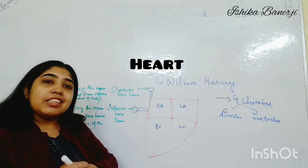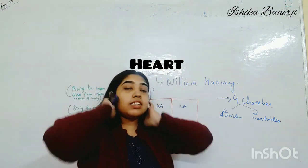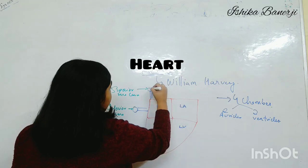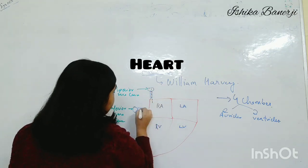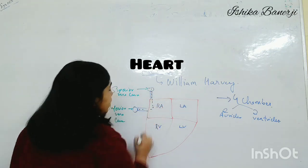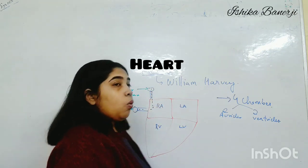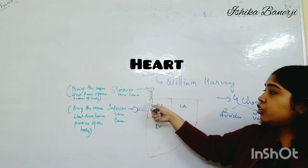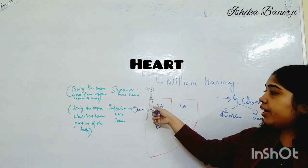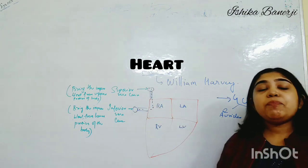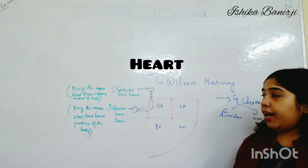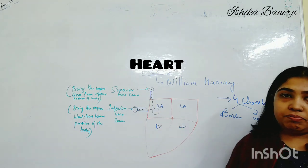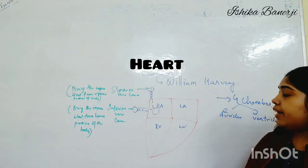So the impure blood is coming in. The question is: who brings the impure blood? The superior vena cava and the inferior vena cava bring the impure blood — and where does it come? It comes into the right auricle.